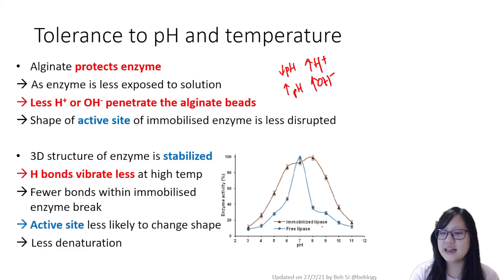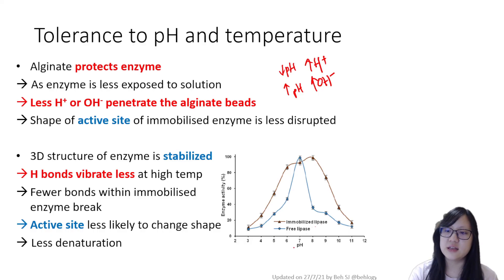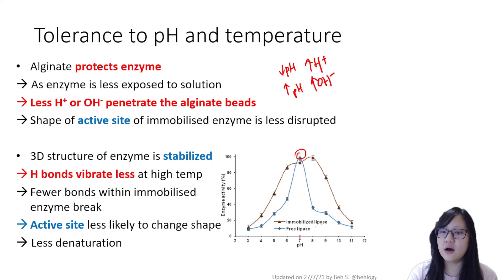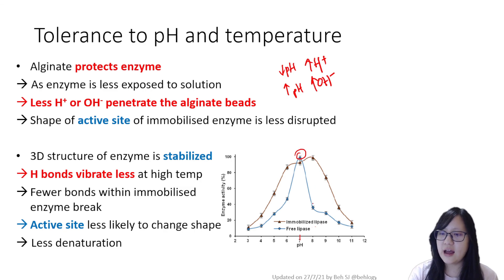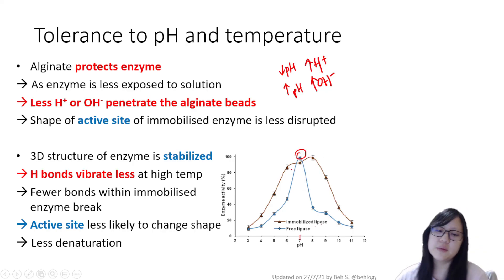This is illustrated in a graph comparing immobilized lipase activity to free lipase activity across different pH values. At pH 7, we can see the optimum pH for free lipase, but immobilized lipase shows higher activity at every single pH value. Its optimum also spans a wider range, because it is simply more stable.